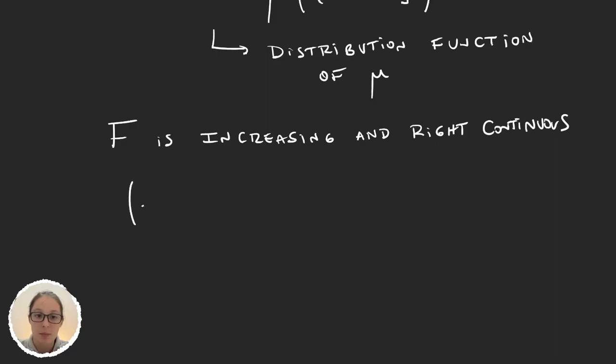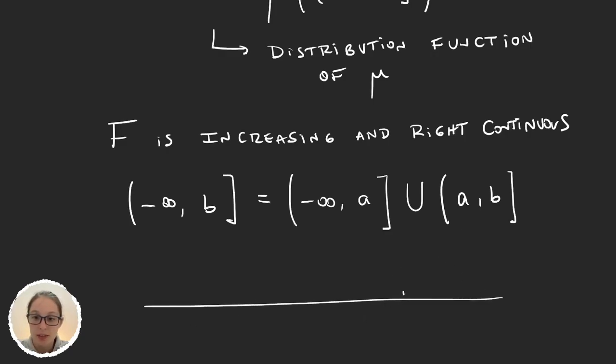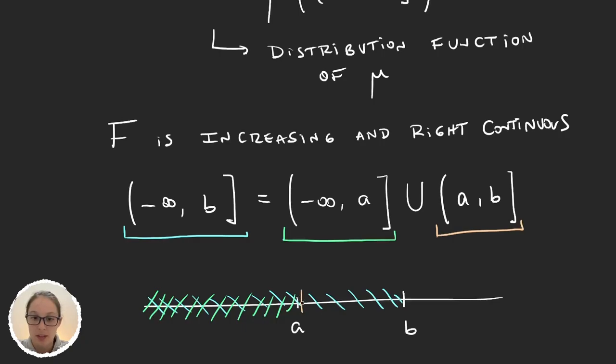We can write the interval (-∞, b] for some b a real number, as (-∞, a] union (a, b]. Obviously we're assuming that a is smaller than b. Basically what we're doing is, if this is b and this is a, then (-∞, b] would be this interval, (-∞, a] would be this other interval, and (a, b] is obviously this interval right here. So we're saying I can write the blue interval as the union of the green interval plus the pink one.